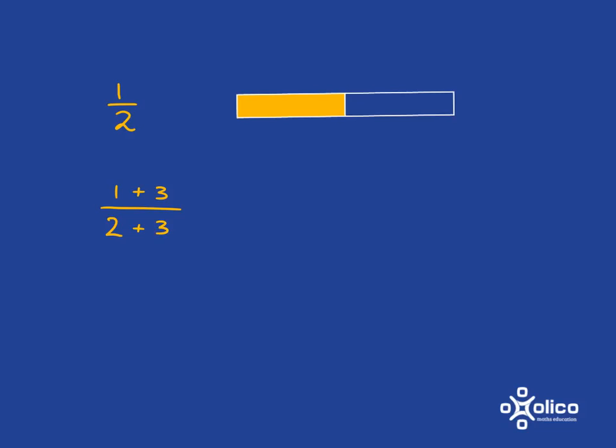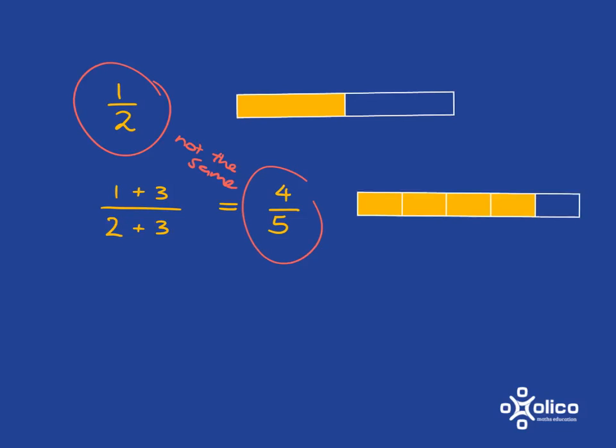If I add 3 to the top and the bottom, will I get an equivalent expression? Well, I get 4 over 5. Hopefully, you can immediately see that half and 4 over 5 are not the same. And you can see that very clearly in the picture.